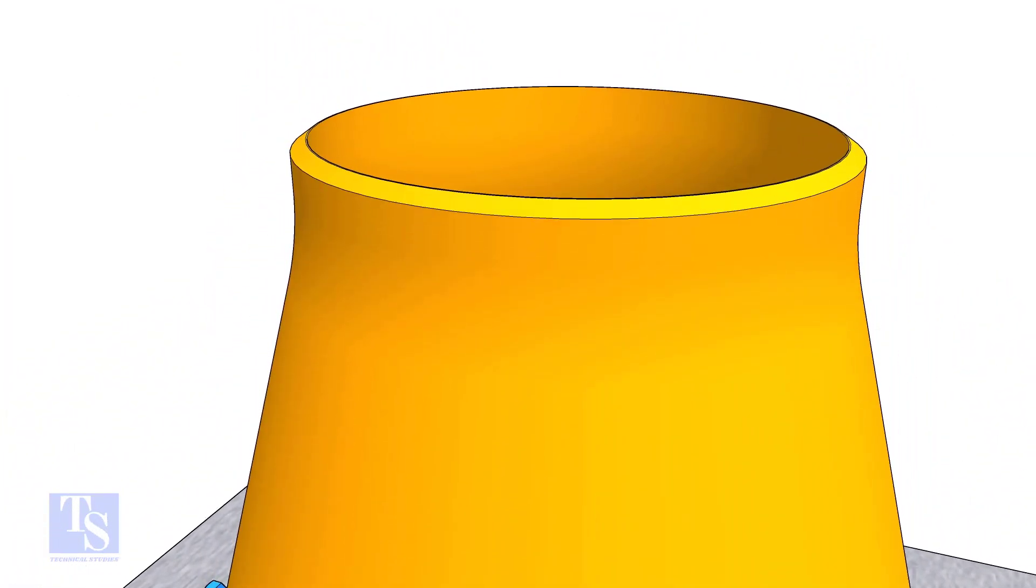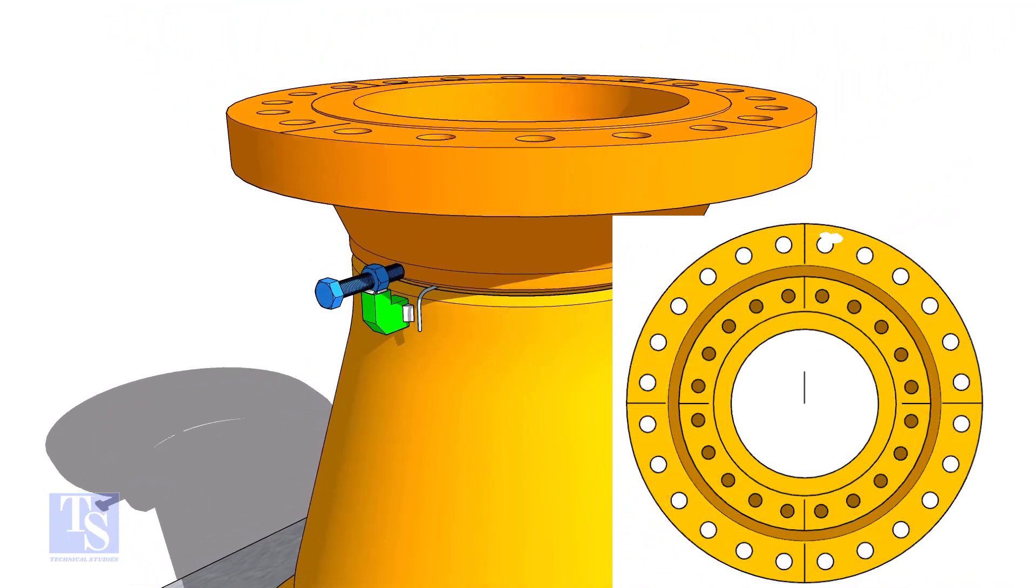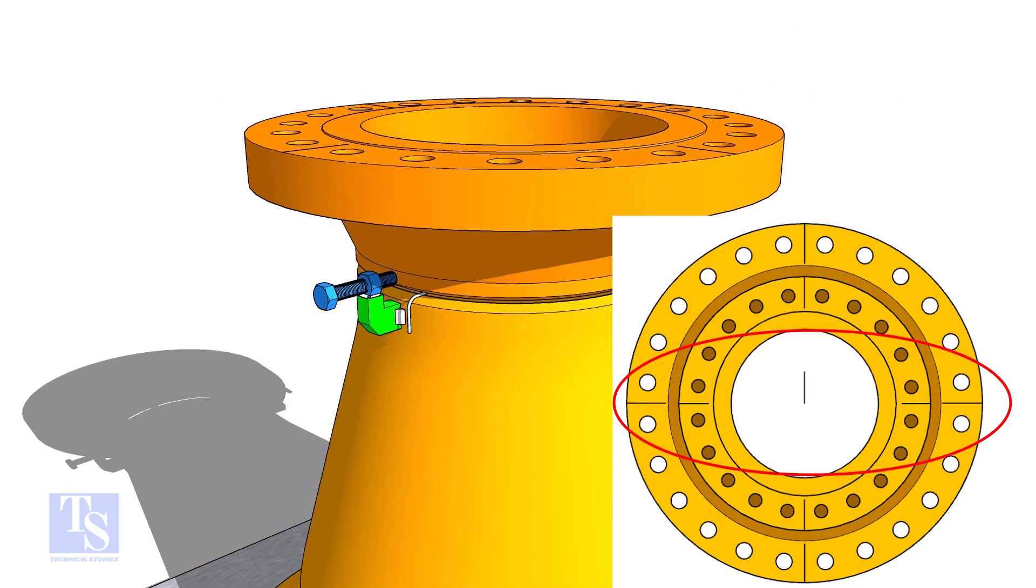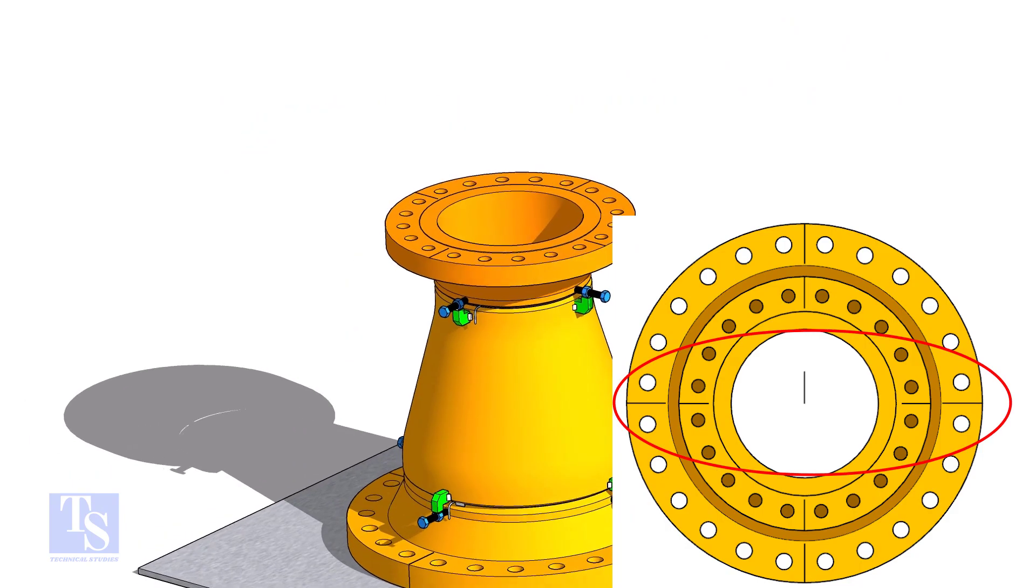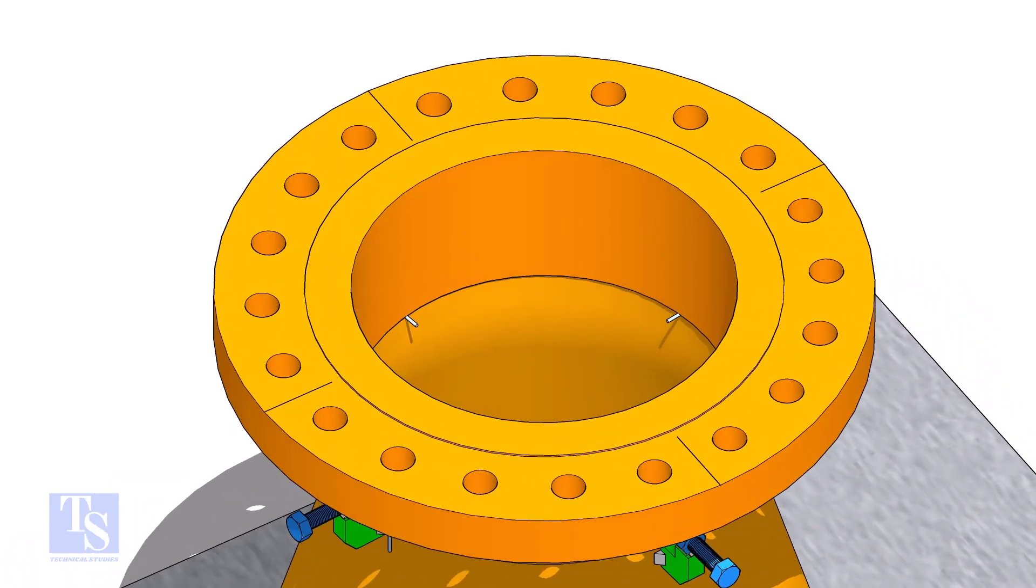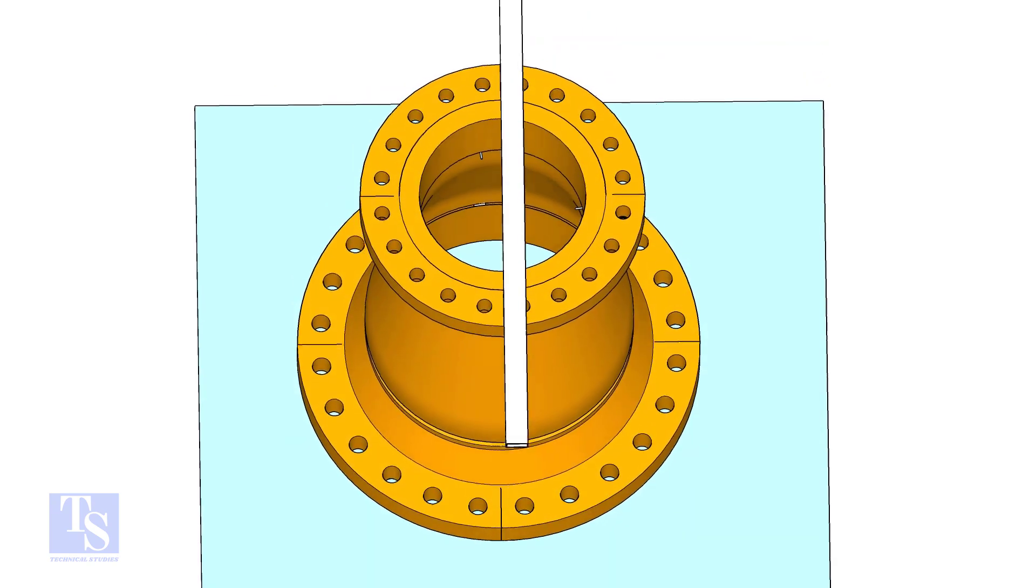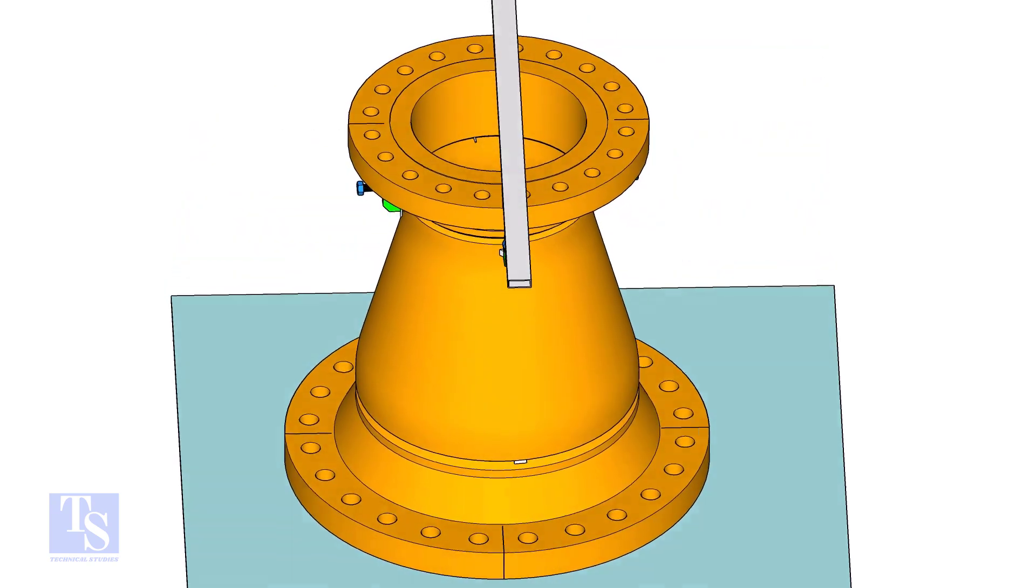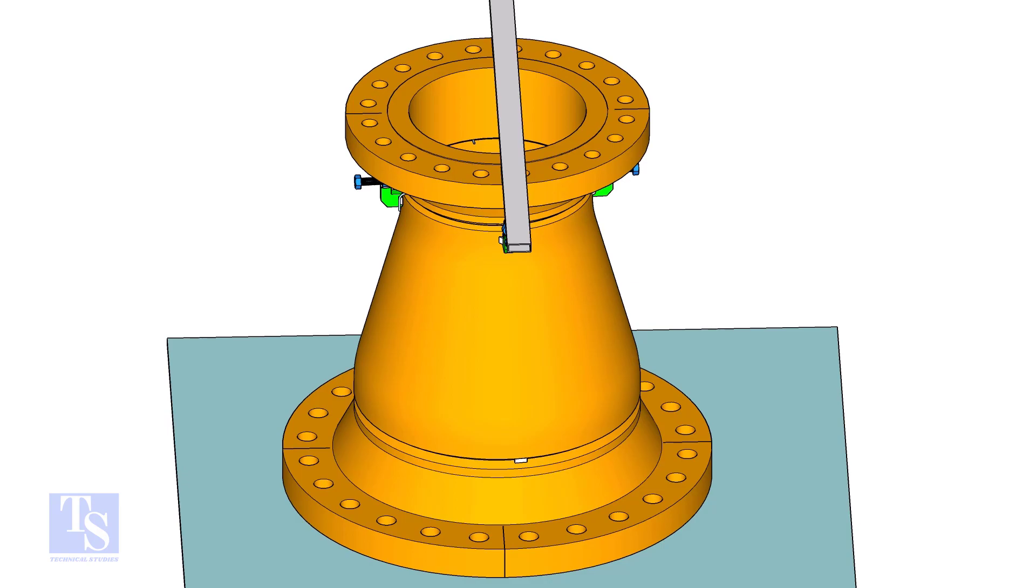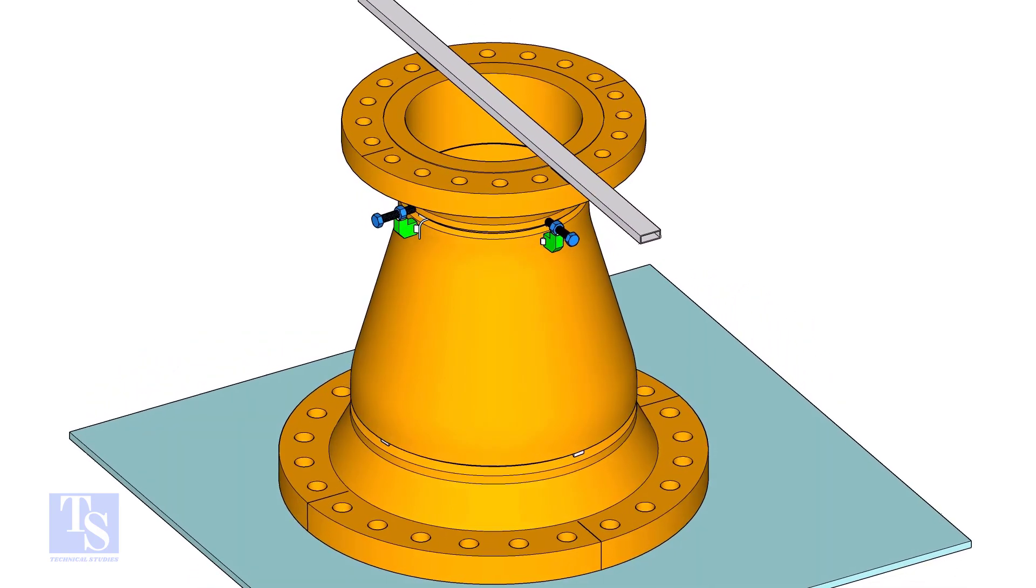Put the smaller flange on its position, roughly matching the center lines of both flanges. Put a straight edge or a rectangular box on the top of the small flange with one edge exactly on the center line.